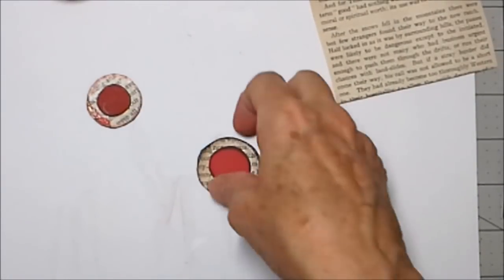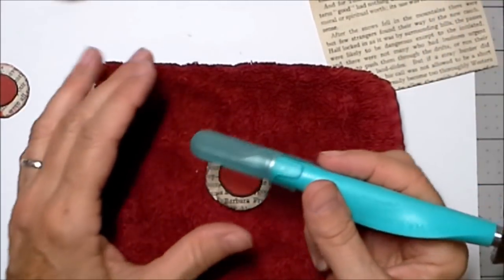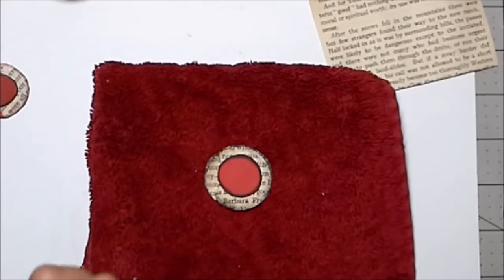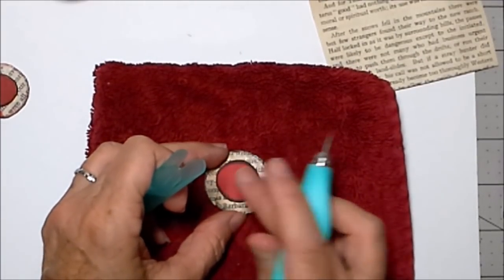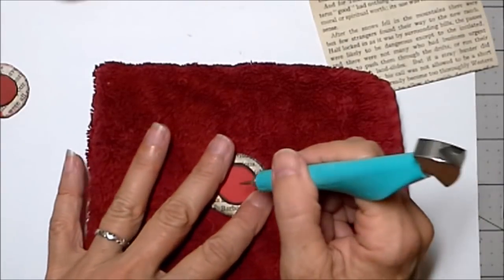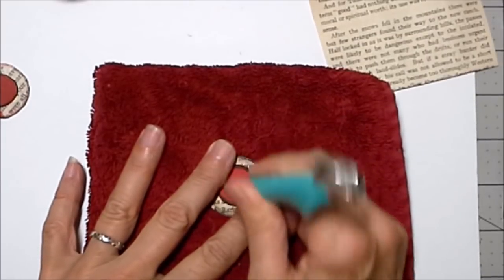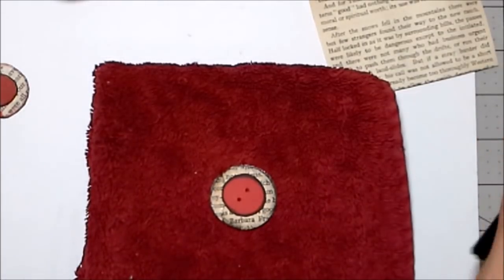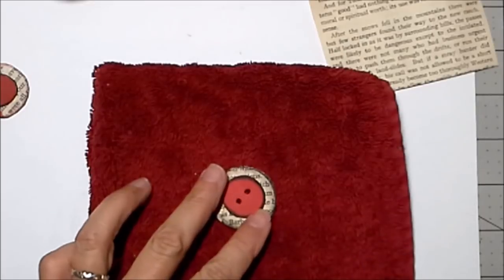Next thing we need to do is punch some holes in this. Man oh man, I am really digging my We R Memory Keepers piercing tool. The reason that I could not find a pokey tool online is because it's not a pokey tool, it's a piercing tool and I have been calling it pokey tool for a really long time. We're going to punch two holes, one, two, and those will be like our buttonholes. Take your sharpie and kind of define the buttonholes just a little bit. There are two things you can do.